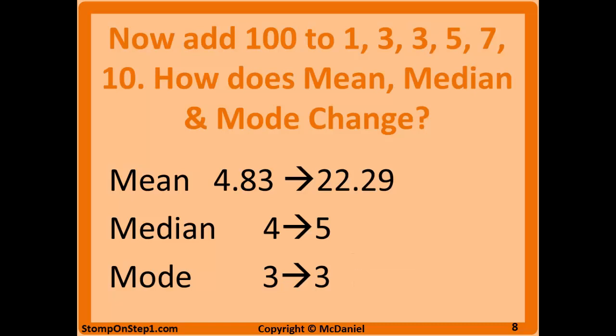What I'm trying to illustrate here is that just one or a couple extreme values added to a data set can have a huge impact on mean, some impact on median, and almost no impact on mode.